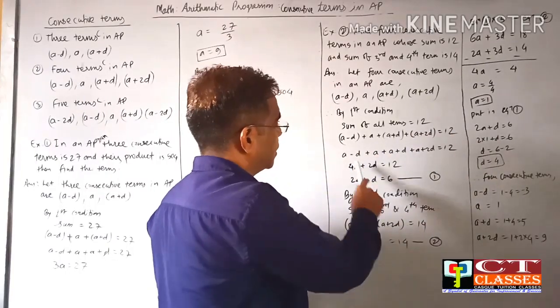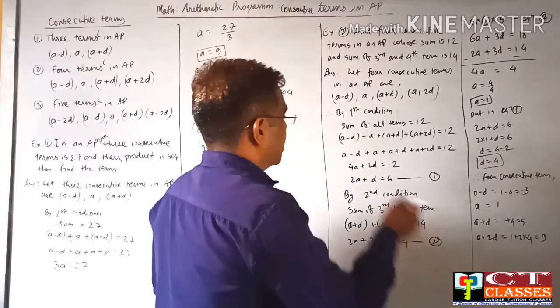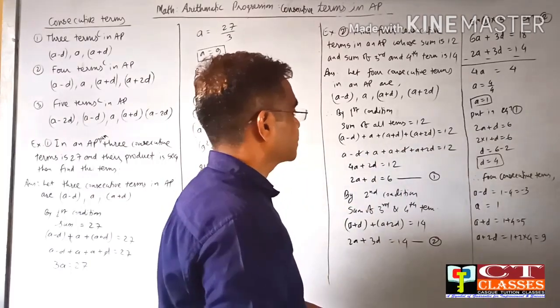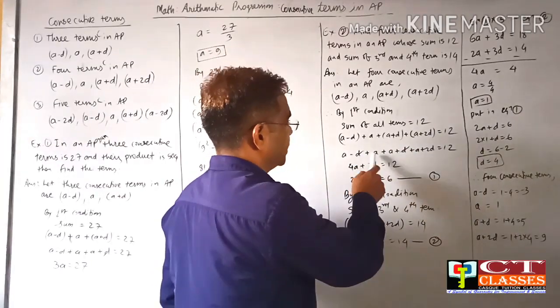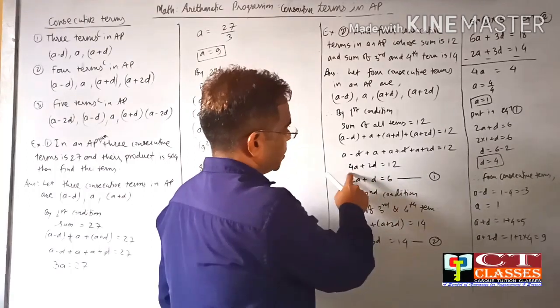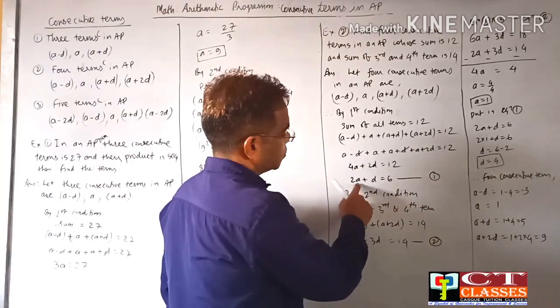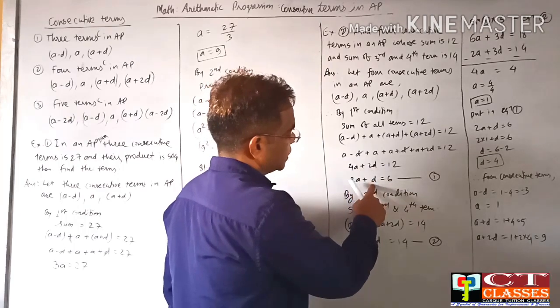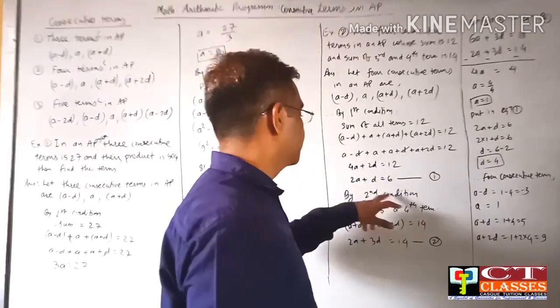(a-d) + a + (a+d) + (a+2d) = 12. Opening brackets, the -d and +d cancel. We get 4a + 2d = 12. Dividing by 2: 2a + d = 6. This is equation 1.